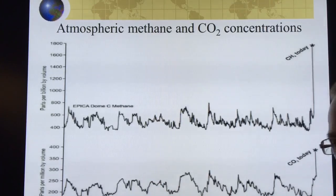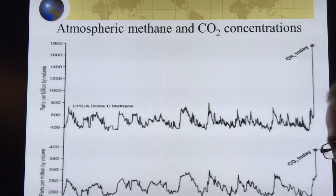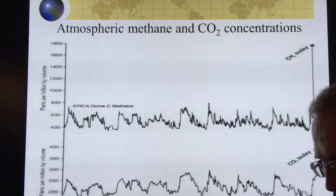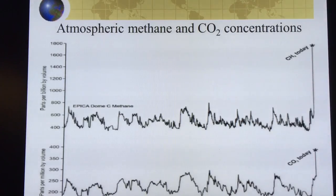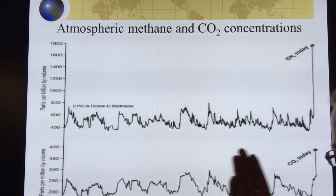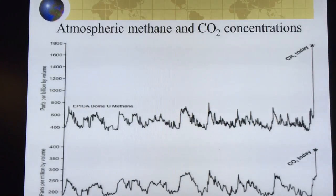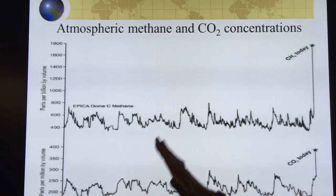These cycles are due to the orbital parameters of the Earth around the Sun. The ellipticity, or ovalness, of Earth's orbit changes on 100,000-year and 400,000-year timescales. The tilt of the Earth changes on a 40,000-year timescale — the tilt relative to the plane of rotation between the Earth and the Sun. Also, the Earth's rotational axis is precessing; it's not always pointing at the North Star, processing on a timescale of about 20,000 years. When you add all these cycles together, it gives you this type of behavior in the paleoclimate record.